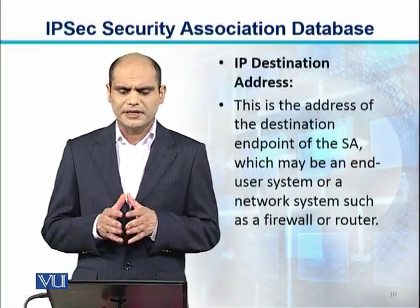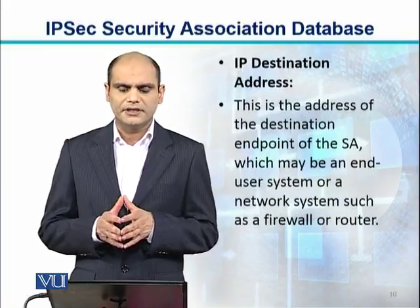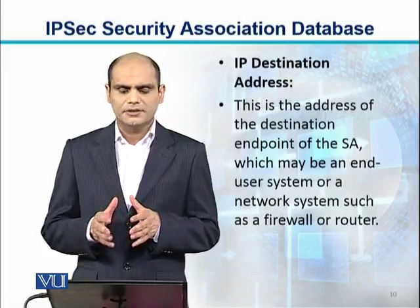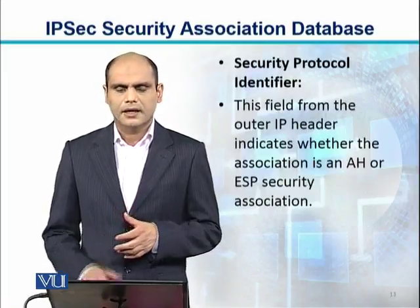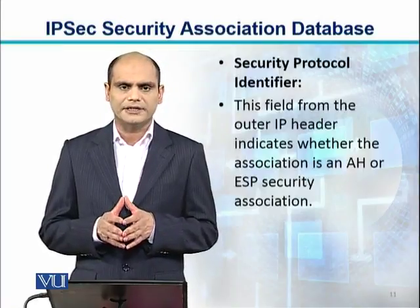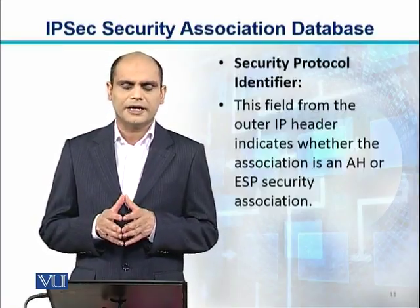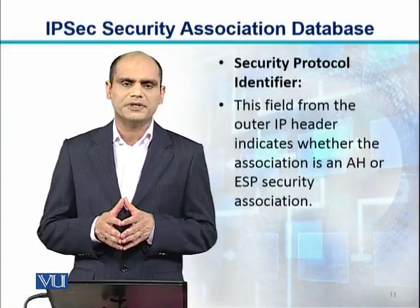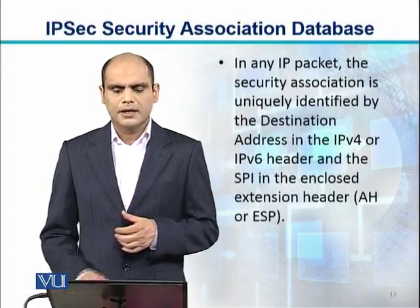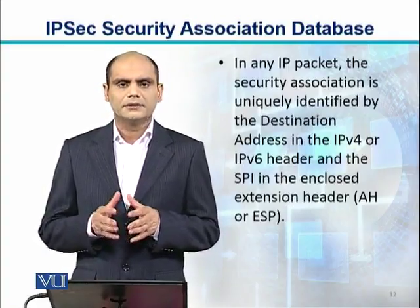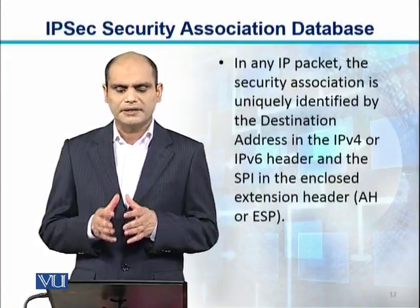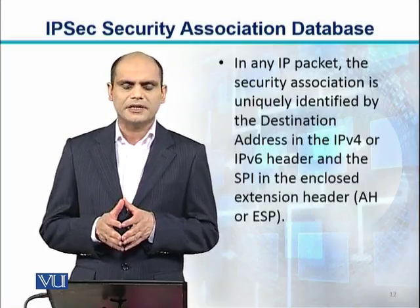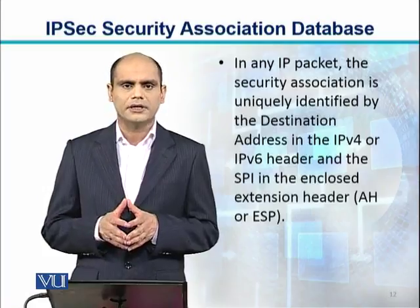The second parameter is IP Destination Address — the address of the destination endpoint of the Security Association, which may be an end-user system or a network system such as a firewall or router. The third parameter is Security Protocol Identifier, which indicates from the outer IP header whether the association is an AH or ESP security association. In any IP packet, the SA is uniquely determined by the destination address in the IPv4 or IPv6 header and the SPI enclosed in the AH or ESP header.